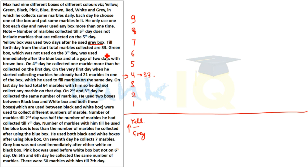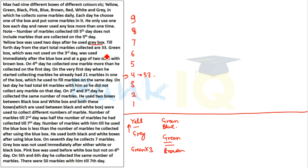Condition 3: The green box, which was not used on the third day, was used immediately after the blue box. So green is used right after blue. Condition 4: The green box has a gap of two days with the brown box. Condition 5: On the fourth day he collected one marble more than he collected on the first day. So if day 1 = x marbles, then day 4 = x + 1 marbles.